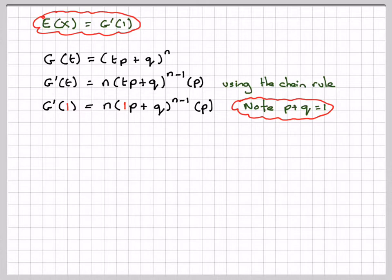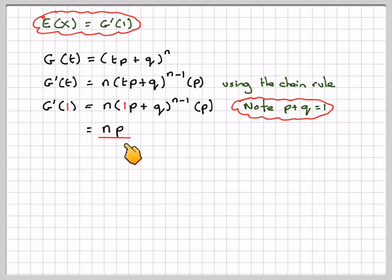The probability of failure and the probability of success, when added together, must equal 1 for a binomial distribution. Therefore we get 1 to the power of n minus 1, which is 1. So we end up with np, which is what we expected for the mean of a binomial distribution.